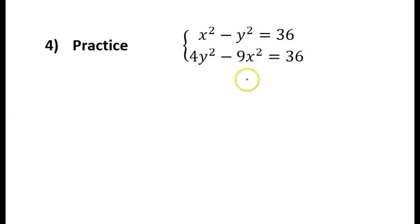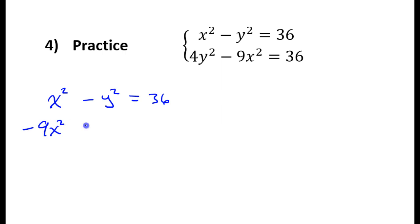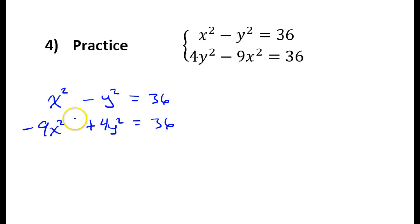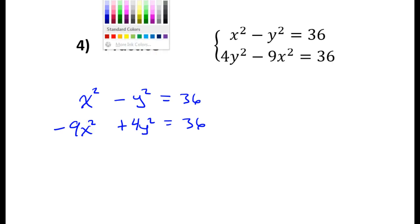Let's try problem number four using elimination again. The top equation has x-squared then y-squared, and the bottom has them reversed, so I'll rearrange: x-squared minus y-squared equals 36, and negative 9x-squared plus 4y-squared equals 36. These are both hyperbolas — you can tell because one term is positive and one is negative in each equation.